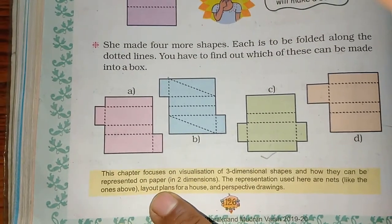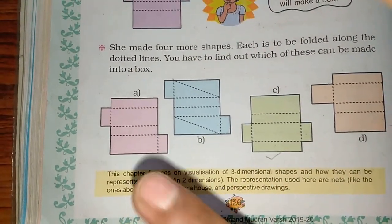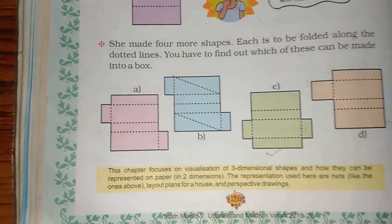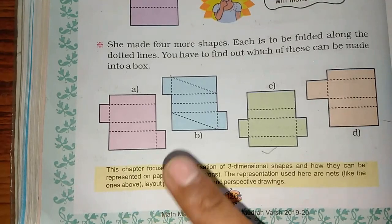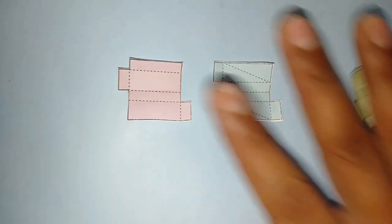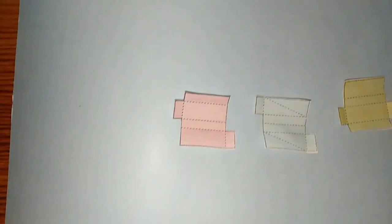First you have to make a figure and then you have to check the box. Let's try and see. Now we will say, all these figures are cut. These figures have been cut. Now we have to make a figure. Now let's check this one. First you will see how it turns out.